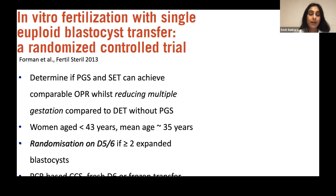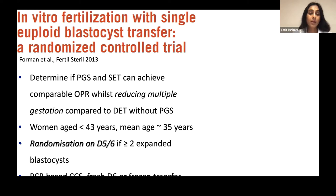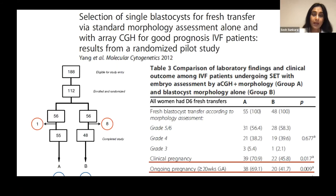Women less than 43 years were included with a mean age of around 35 years. Randomization was done on day five or day six if there were two or more expanded blastocysts, and comprehensive chromosome screening was PCR-based. Those in the PGS arm could have a fresh day six transfer because they had an in-house laboratory for immediate genetic testing, or a frozen embryo transfer. In settings without in-house genetic assessment, a freeze-all strategy would be needed.